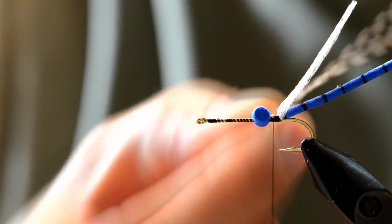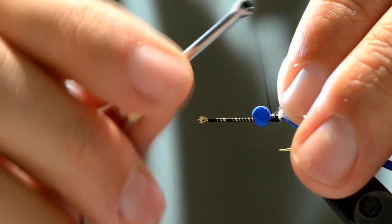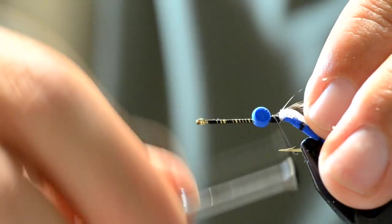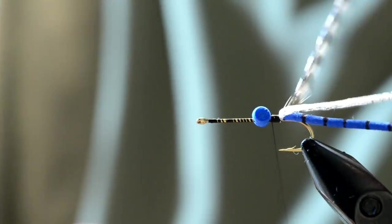So now I'm going to take some grizzly hackle and tie that in right in this gap here. Make sure it's secure and do a few wraps.